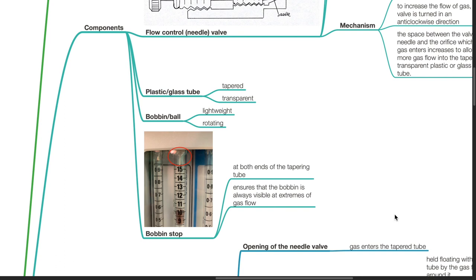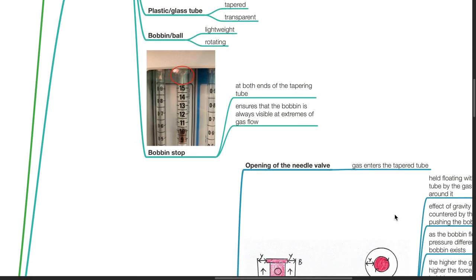The plastic or glass tube is tapered and transparent. The bobbin or ball is lightweight and rotating. There is a bobbin stock at both ends of the tapering tube and ensures that the bobbin is always visible at extremes of gas flow.